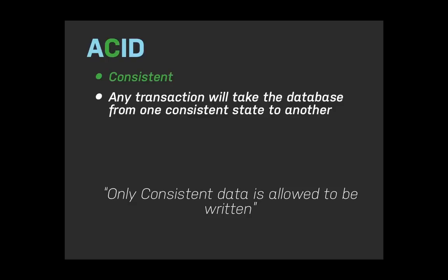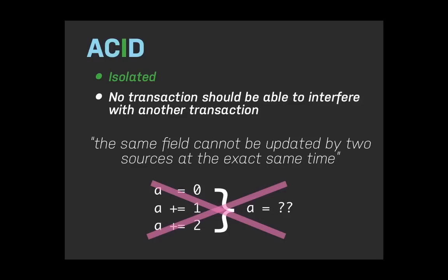We want our database to be Consistent — any completed transaction takes the database from one consistent state to another. Only consistent data is allowed to be written; you can't have half of a field be an integer and the other half a string. Isolated means no transaction should be able to interfere with another. If two users try to update the same field at the exact same millisecond, that should not be allowed — it would put the database in an unknown state.